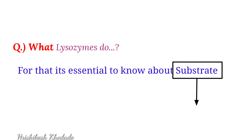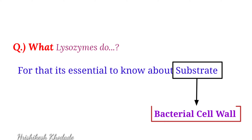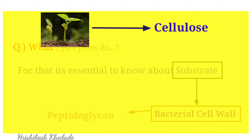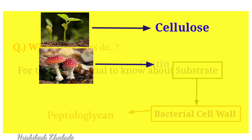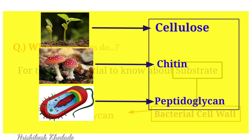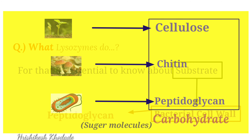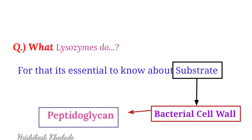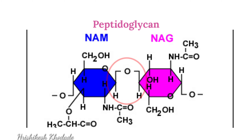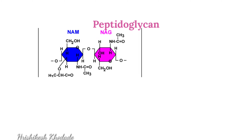The enzyme acts upon the bacterial cell wall, which is composed of peptidoglycan. In plant cells, the cell wall is made up of cellulose; in fungi it is chitin; in bacteria it is peptidoglycan. In all these cases, the cell wall is made up of carbohydrates — sugar molecules — and in peptidoglycan, the sugar molecules are connected to each other by glycosidic bonds.